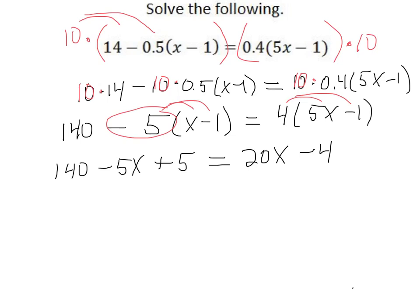Now, like terms. Notice, 140 and plus 5 are like terms. That makes 145. And minus 5x equals 20x minus 4. This would be considered simplified. We have simplified our equation.